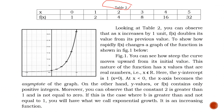Here is Table 2. Your first row represents your x values and your second row represents your f of x. Once we input these values to the given function, the second row will serve as your resulting values — the dependent values. Whatever we input, it could be a one-to-one relationship. Looking at the table, you can observe that as x increases by 1 unit, f of x doubles its value from its previous value.